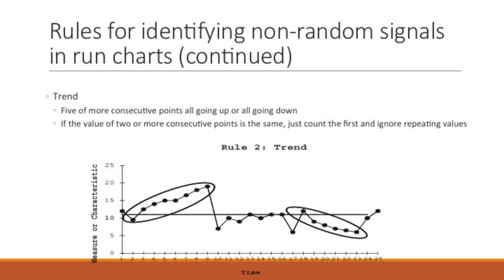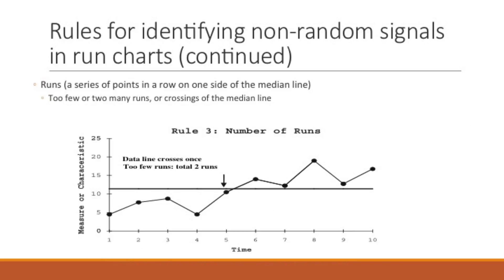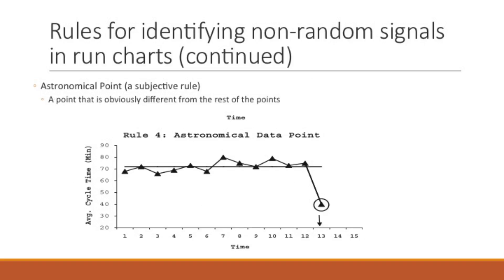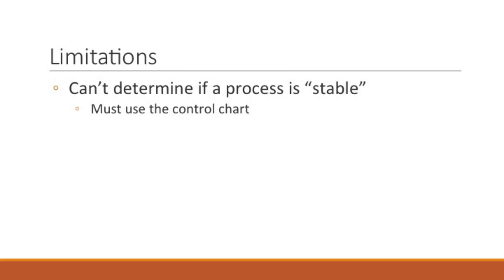This chart displays the rule about trend. The third rule is about the number of runs — runs are a series of points in a row on one side of the median line. Too few or too many runs or crossings of the median line indicate non-random signals. The fourth rule is about an astronomical data point — something that is obviously different from the rest of the points. One limitation of the run chart is that you're not able to determine if a process is stable; for that, we must use the control chart.